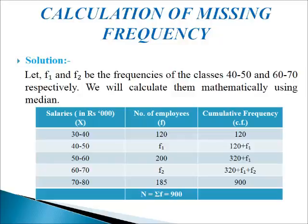In the first column, we write the class intervals: 30 to 40, 40 to 50, and so on. In the second column, we write the frequencies. In place of missing frequencies, we write F1 and F2 for class intervals 40 to 50 and 60 to 70. In the third column, we write the cumulative frequency.